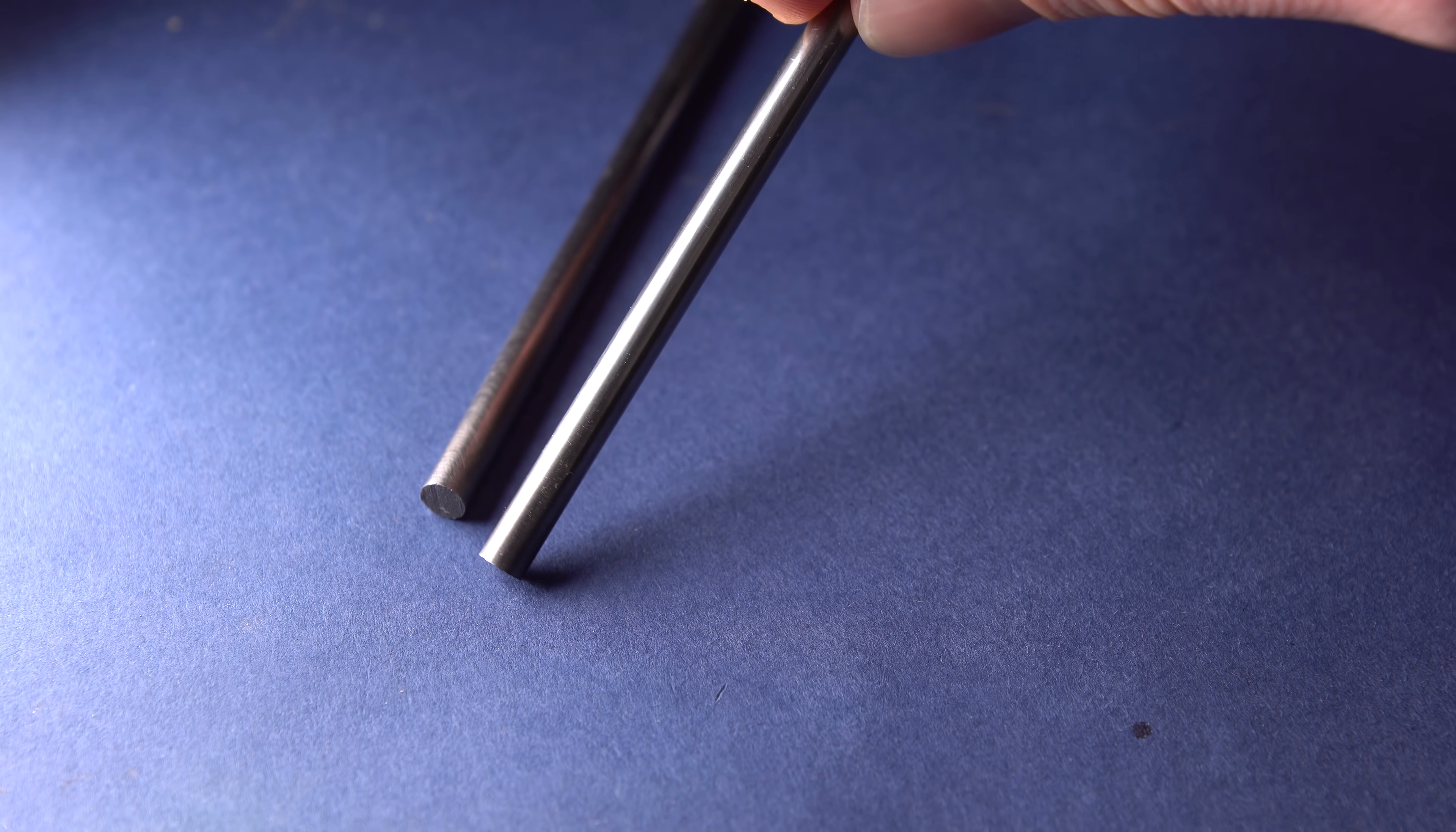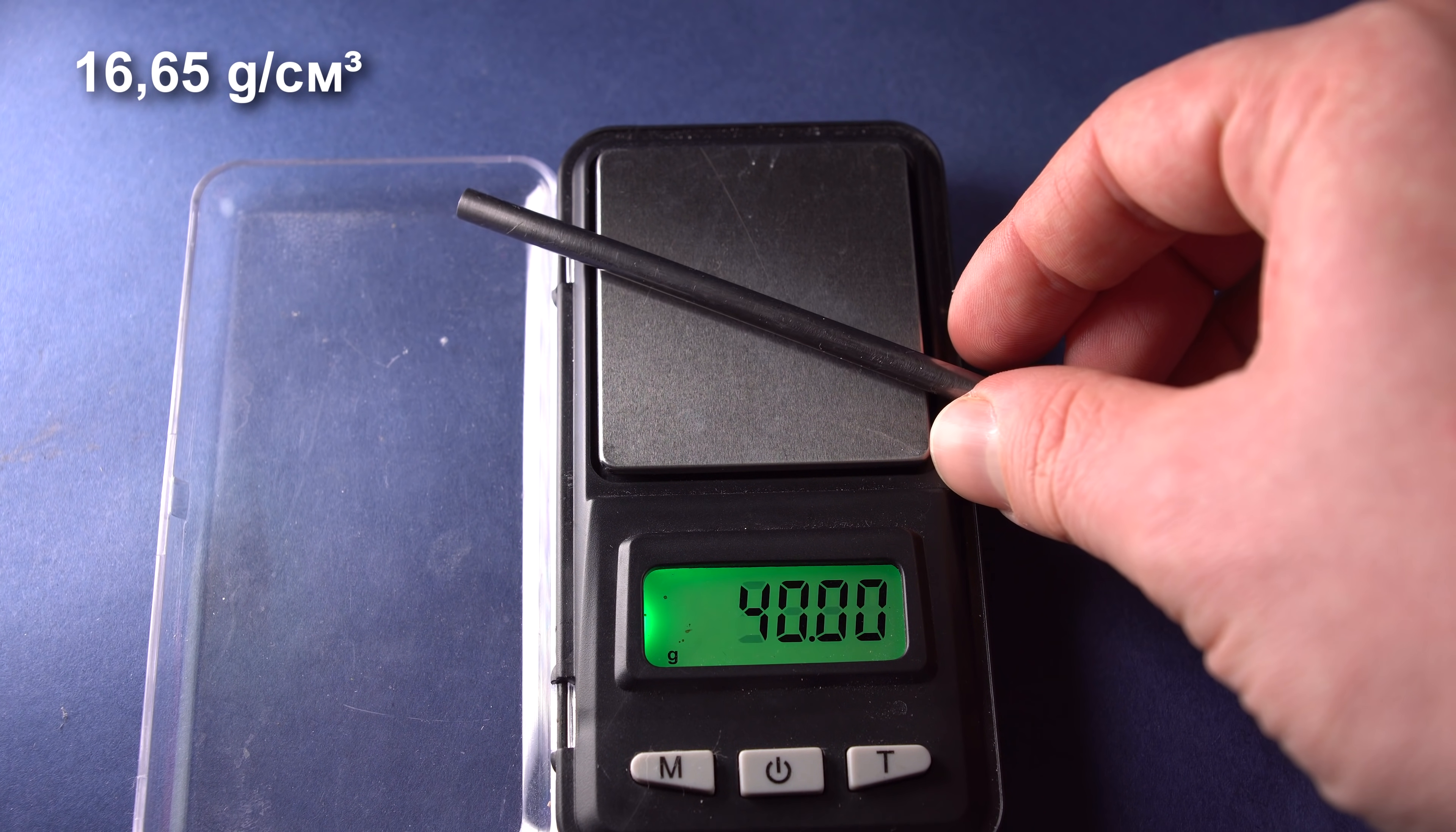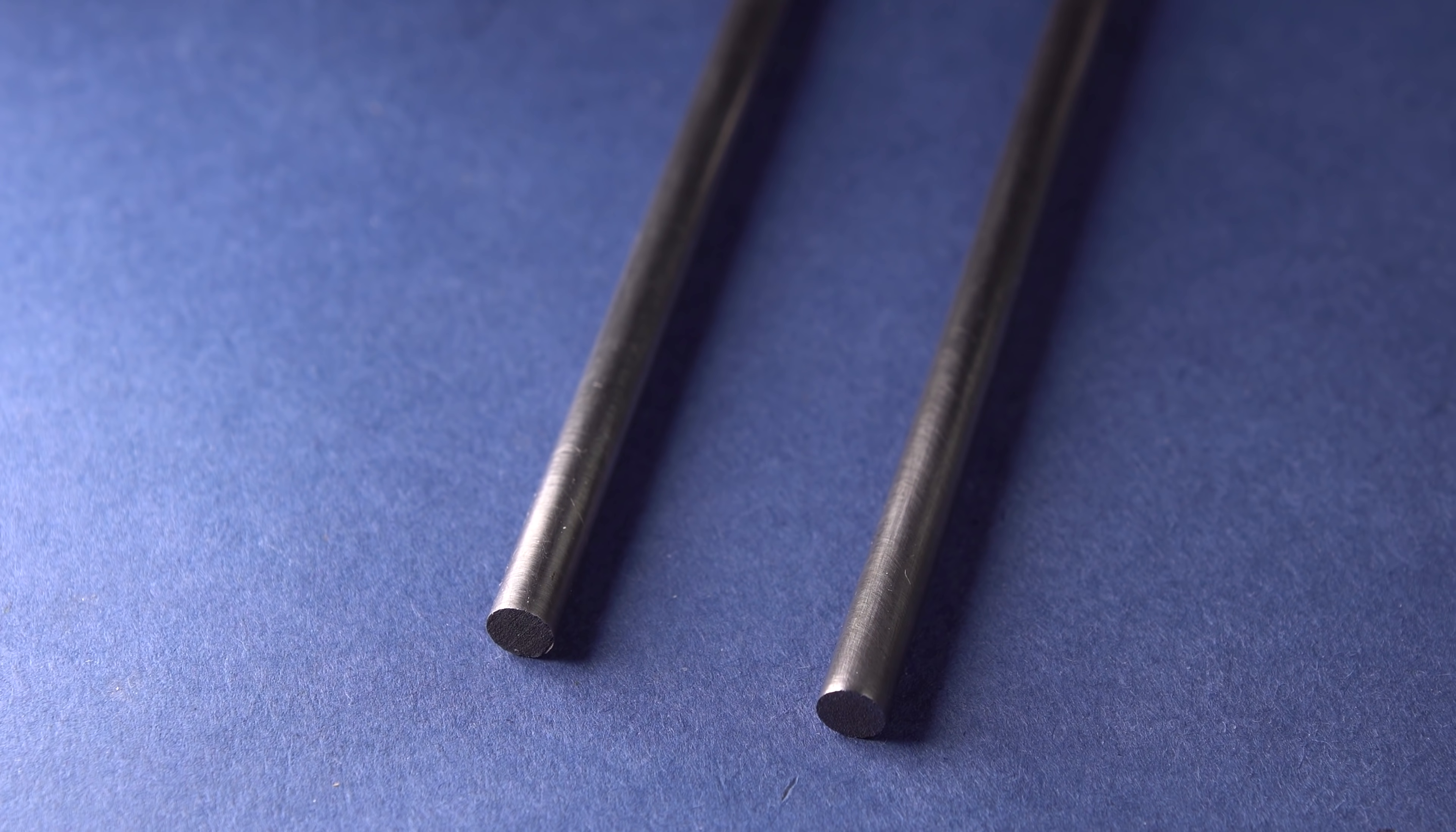Externally, tantalum looks like a gray shiny metal and is quite heavy. In density, it comes next after gold. If you take the current market price, one kilogram of tantalum costs around 150 dollars. Therefore, this metal is quite expensive.